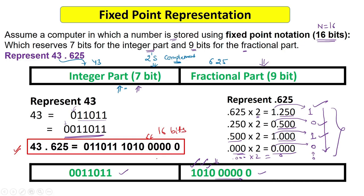This process was shown in the number system video, but there we were not specifying how many bits to reserve for the integer and fractional parts. When we fix how many bits are needed for each part, we call that fixed point representation. The decimal point is implied — only binary bits are stored.